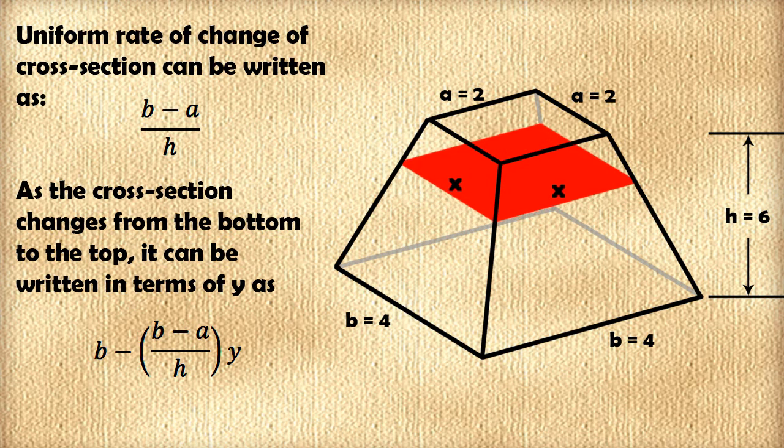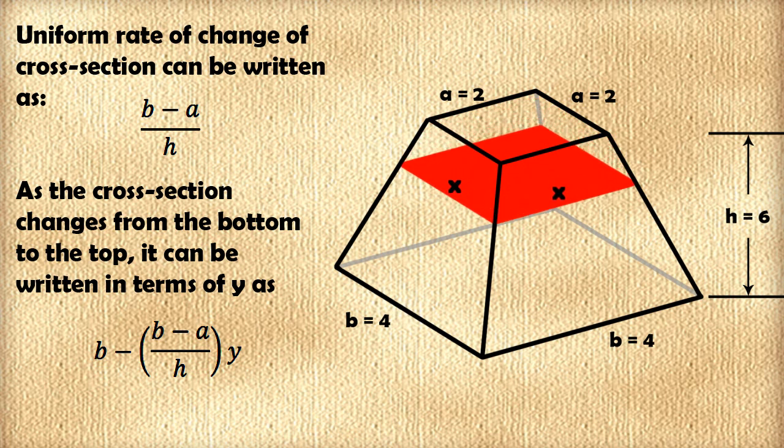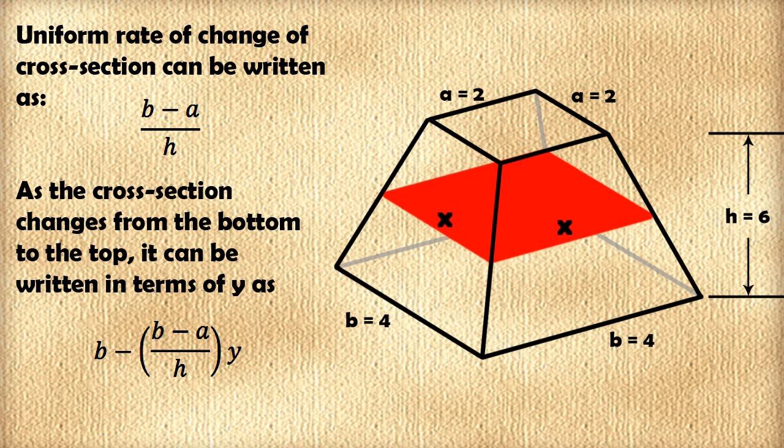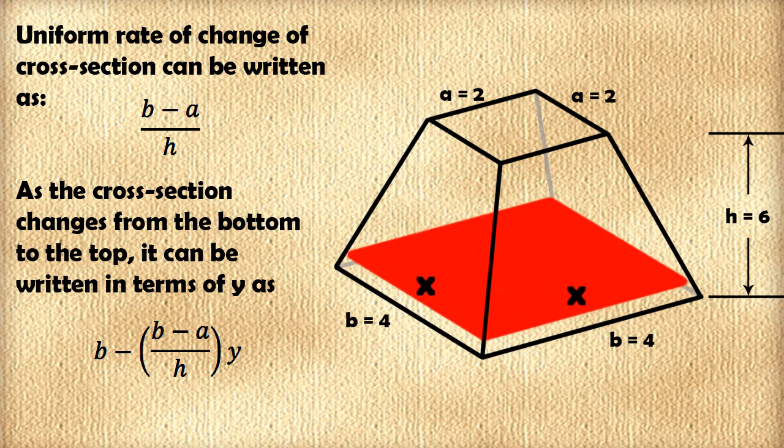As we can see, as the infinitesimally thin cross-section travels from the bottom to the top, there is a uniform rate of change. That uniform rate of change can be written as b minus a over h, where b is the length of the bottom side, and a is the length of the top side, and h is the height.